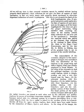Uncate: hook-like, as in the mouthparts of many fly larvae; also uncinate. Uncinate: hook-like, as in the mouthparts of many fly larvae; also uncate. Unguis (plural ungues): the claws at the tip of most insect pretarsi.